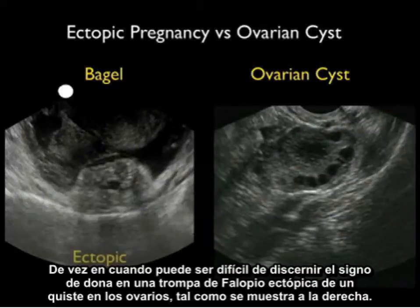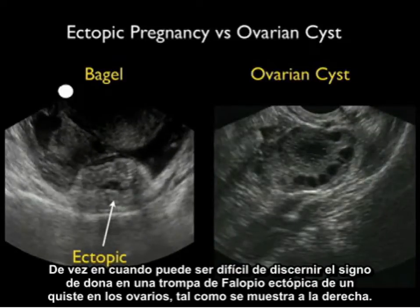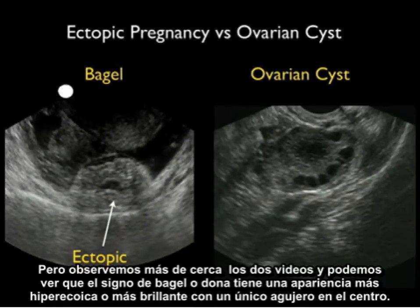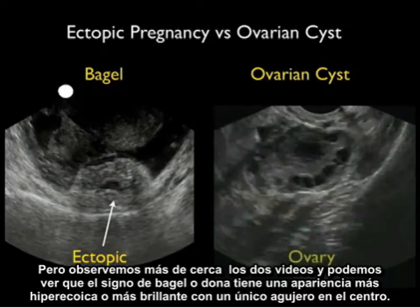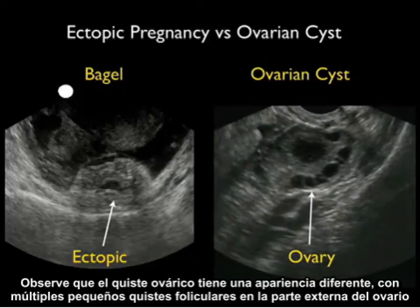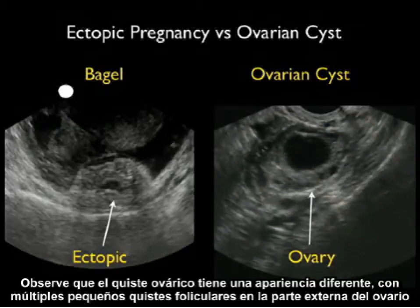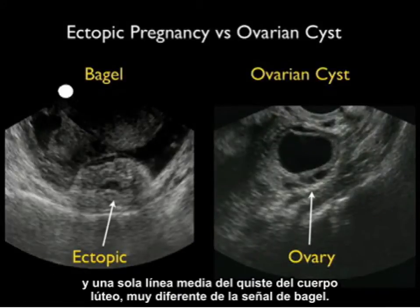Occasionally it can be difficult to discern the bagel sign of a fallopian tube ectopic from an ovarian cyst, as shown here to the right. But looking closer at the two video clips, notice that the bagel sign has a more hyperechoic or brighter appearance with a single hole in the middle. Notice that the ovarian cyst has a different appearance with multiple small follicular cysts to the outer portion of the ovary and a single midline corpus luteum cyst — very different than the bagel sign.